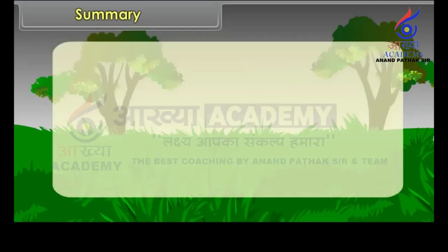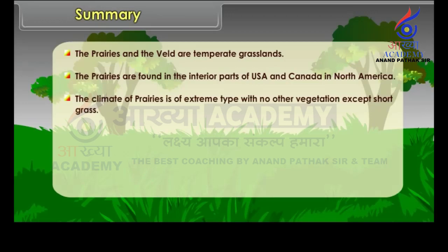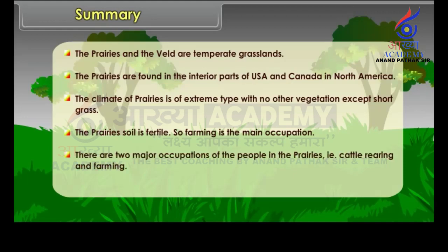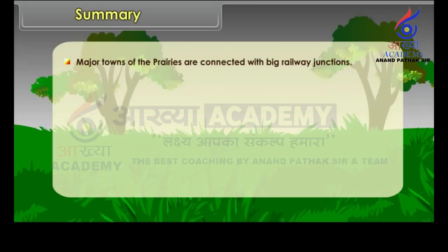The Prairies and the Veld are temperate grasslands. The Prairies are found in the interior parts of USA and Canada in North America. The climate of Prairies is of extreme type with no other vegetation except short grass. The prairie soil is fertile, so farming is the main occupation. The two major occupations are cattle rearing and farming. Wheat farming is the main agricultural activity. Major towns of the Prairies are connected with big railway junctions.